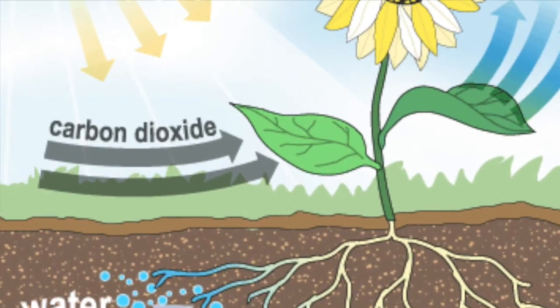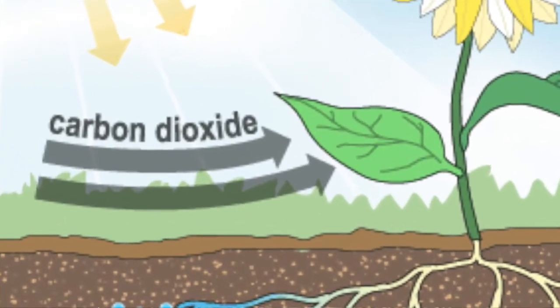There are many ways animals are dependent on plants for survival, but plants need animals to survive too. To make food, plants need carbon dioxide. Animals exhale carbon dioxide, which is then used by plants to make food. Animals help plants make food.